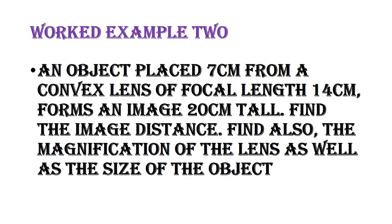Worked example two: An object is placed 7 cm from a convex lens of focal length 14 cm and forms an image of height 20 cm. So U = 7 cm, F = 14 cm, image height IH = 20 cm. Find the image distance V, the magnification M, and the object size OH.